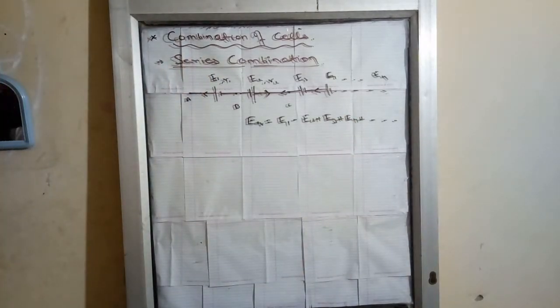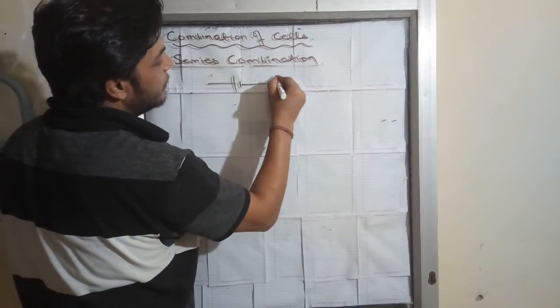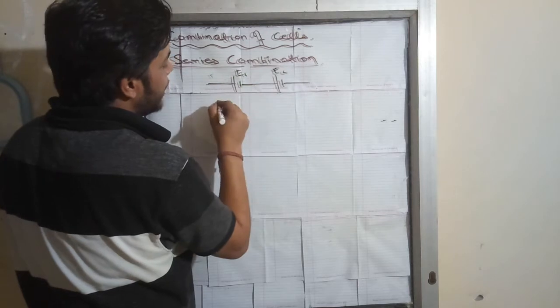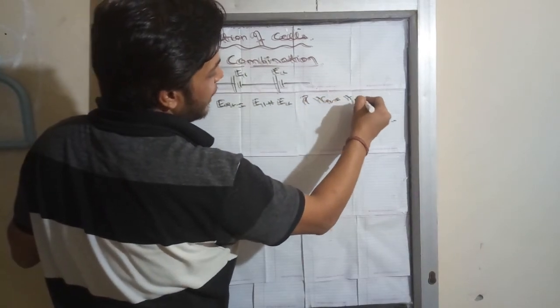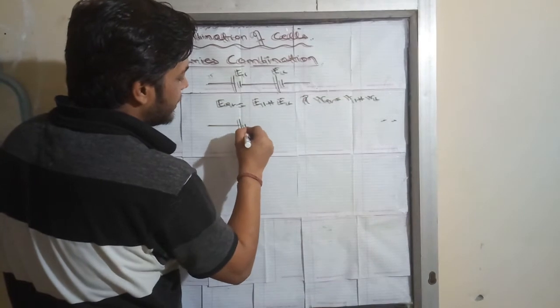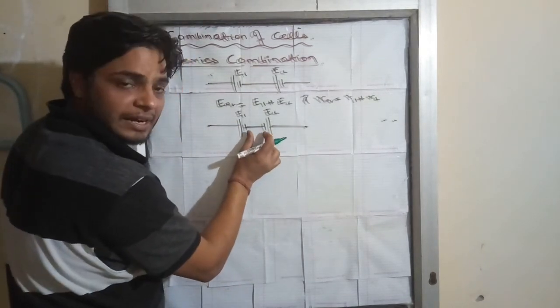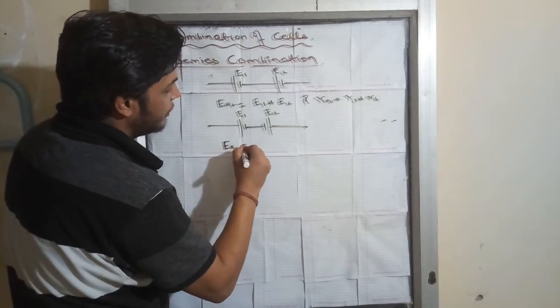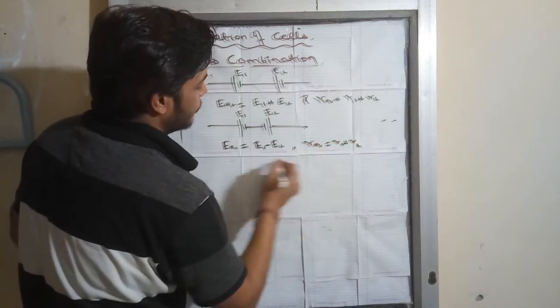When the same terminals are connected, then subtraction occurs. For example, normally E equivalent was E1 plus E2 and R equivalent was R1 plus R2. But suppose the same terminals are connected — in that case, E equivalent will be E1 minus E2. However, R equivalent remains the same: R1 plus R2, in both cases.